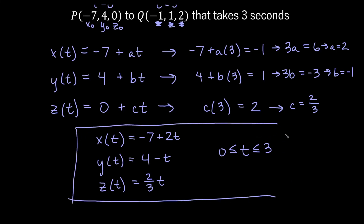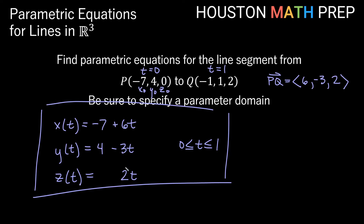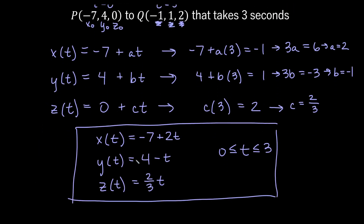Comparing this 3-second trajectory to the previous 1-second one: the constant terms negative 7, 4, and 0 stay the same, but the coefficients changed from 6, negative 3, and 2 down to 2, negative 1, and 2 thirds — each divided by 3. In other words, we travel the same path at one third the speed to arrive in 3 seconds instead of 1. Adjusting the multiple of your t coefficients is another way to control the travel time. Hopefully this introduction helps you work out parametric equations for lines in 3D space. Thanks for watching — we'll see you in the next video.